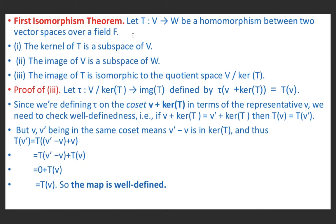Now the first isomorphism theorem. Let T from V to W be a homomorphism — meaning it preserves addition and scalar multiplication between two vector spaces over a field F. The kernel of T is a subspace of V. The image of T is a subspace of W. The image of T is isomorphic to the quotient space V/ker(T). We have proved the first two parts in a previous lecture, so we will prove the third part in this lecture.